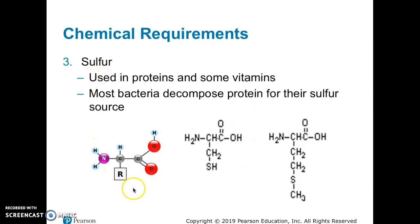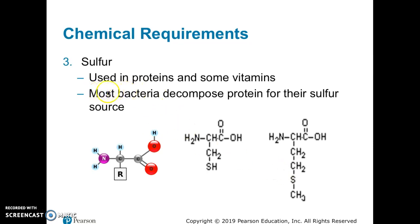Third is sulfur. The variable R group of proteins that changes from amino acid to amino acid — a bunch of those have sulfur. Here are a couple of examples written as chemical formulas. We still see the nitrogen, carbon, carbon backbone and those two oxygens on one end. In the R group of one amino acid there's a carbon and a sulfur. Another amino acid has a whole chain of molecules on that middle carbon that also contains sulfur. There are also certain vitamins used in metabolism that contain sulfur. Bacteria can take out sulfur when they decompose proteins so they can put it into the amino acids they need.